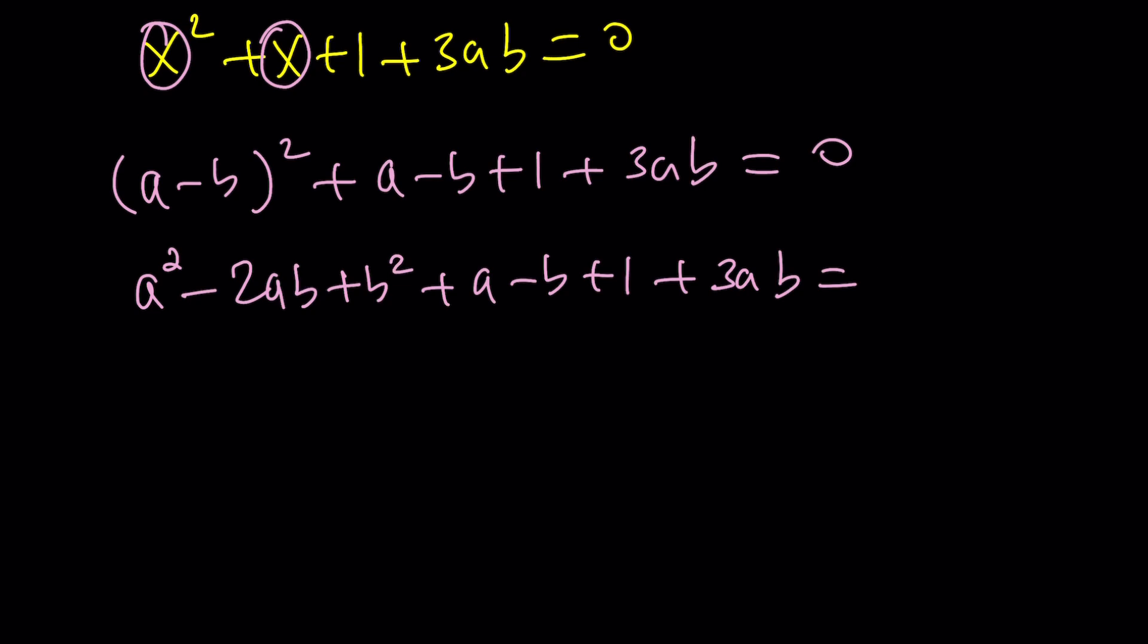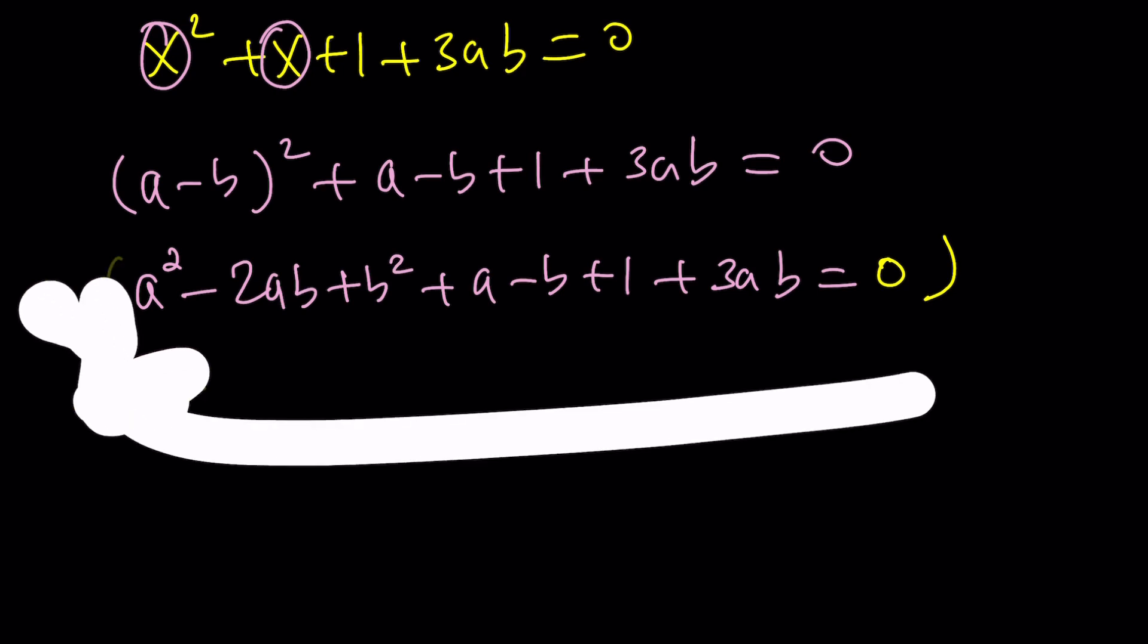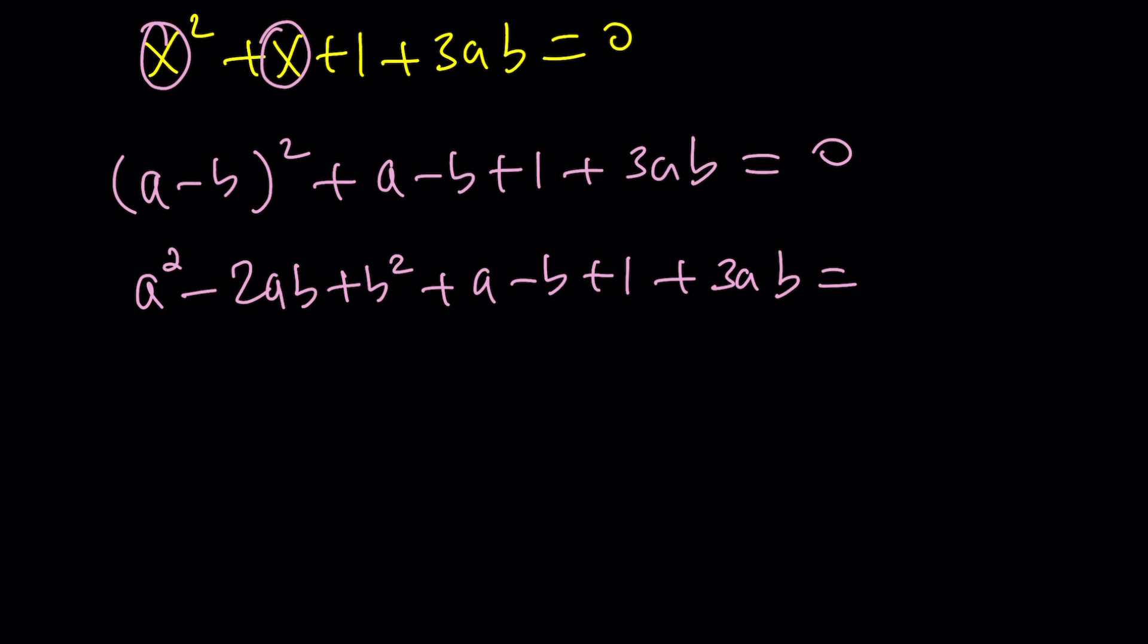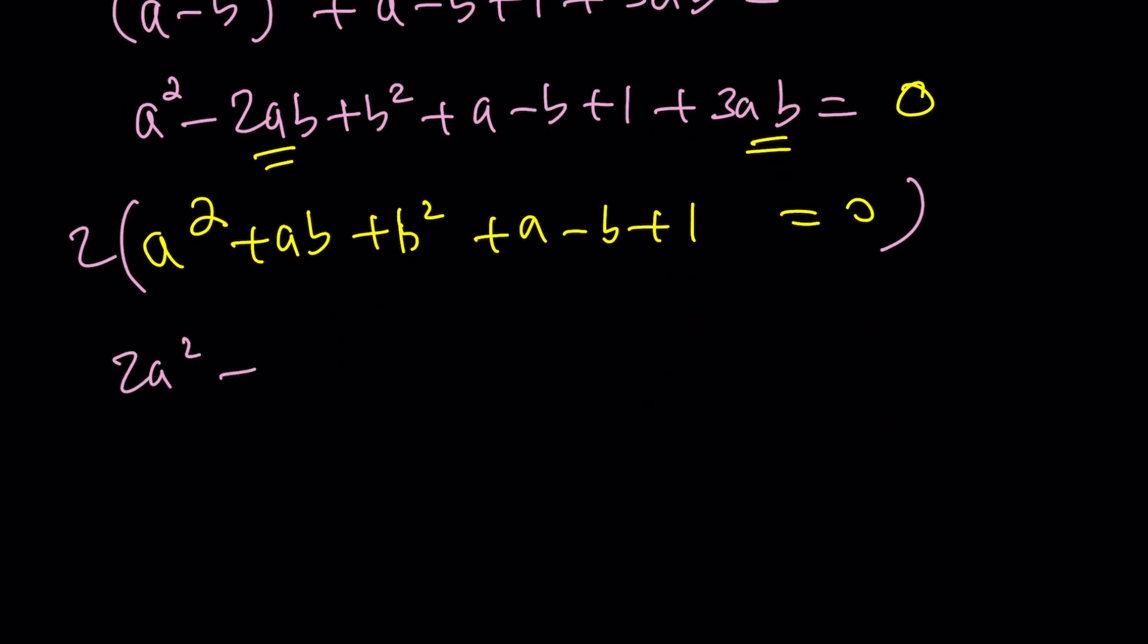a² - 2ab + b² + a - b + 1 + 3ab = 0. This looks messy, but we can multiply both sides by 2. Wait, I forgot to do something before that. First, we're going to simplify it because these two terms simplify. So that gives us a² + ab (negative 2 plus 3) + b² + a - b + 1 = 0. Then we'll multiply by 2, which makes more sense now. That gives us 2a² + 2ab + 2b² + 2a - 2b + 2 = 0. Why did we do that? There's a good reason.